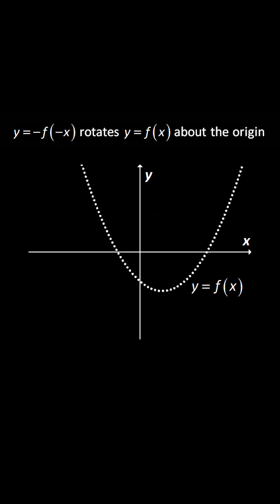Rule three, y equals negative f negative x. So this one rotates y equals f(x) about the origin.